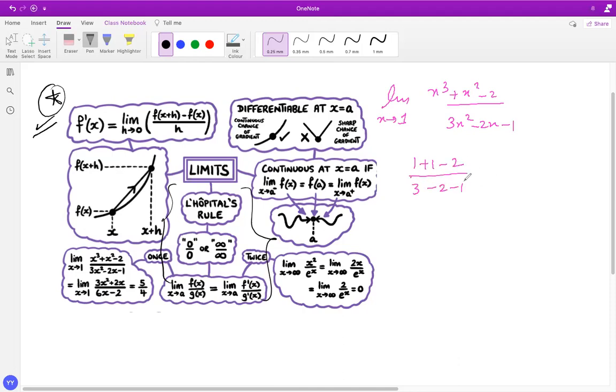So firstly, you've got to check before you do L'Hôpital's Rule, so that comes to be 1 plus 1 minus 2, that's 0 over 0.